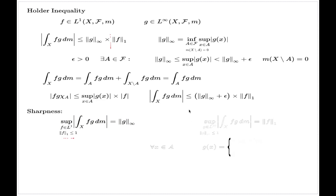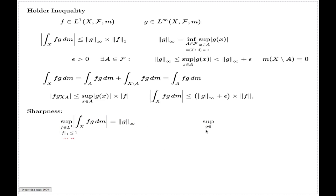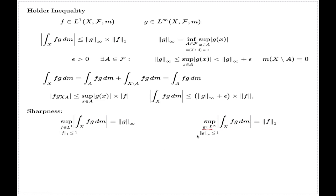The other version of sharpness is the following: the supremum where G runs freely, again with the condition that the essential supremum of G does not exceed 1, is also equal to the first factor — the L1 norm of F.